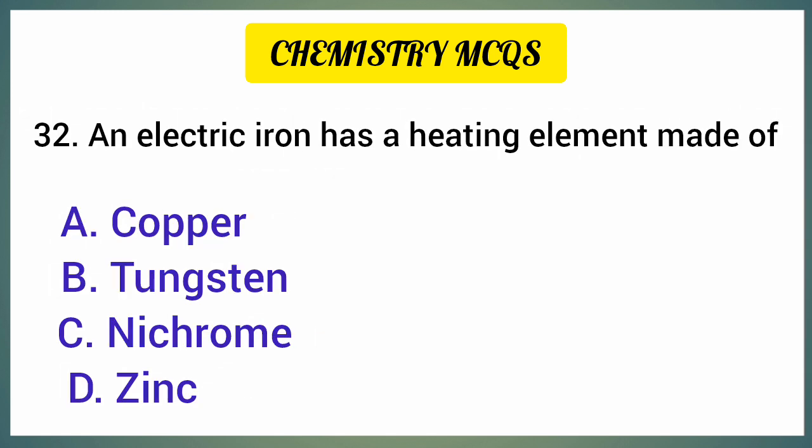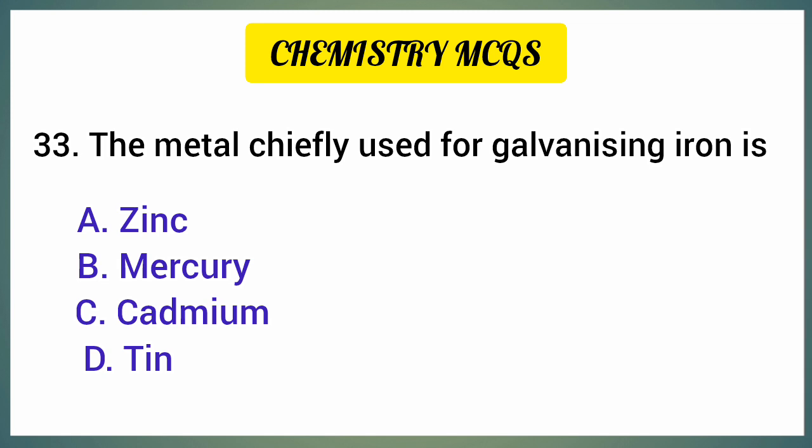An electric iron has a heating element made of — correct option is option C: Nichrome. The metal chiefly used for galvanizing iron is — correct option is option A: Zinc.